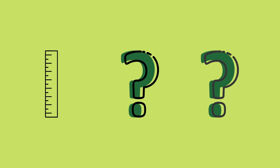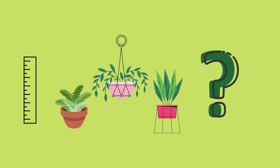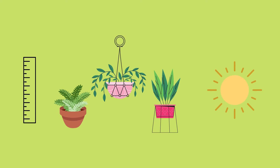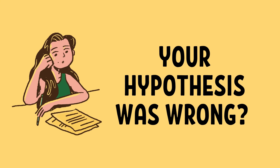For our plant and sunlight experiment, we would build from the prediction to decide how to measure growth, what kind of plants to grow, how to control how much the plants are watered, how to give the plants light and ensure that timing is consistent, and what replicates to use.